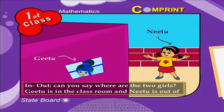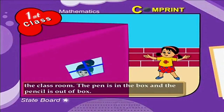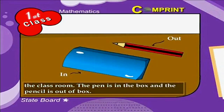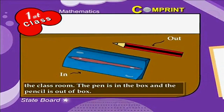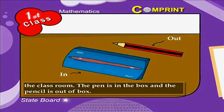In and out — can you say where are the two girls? Getu is in the classroom and Neetu is out of the classroom. Now have a look at another example: the pen is in the box and the pencil is out of the box. Now we hope it is very clear for you about the different positions.